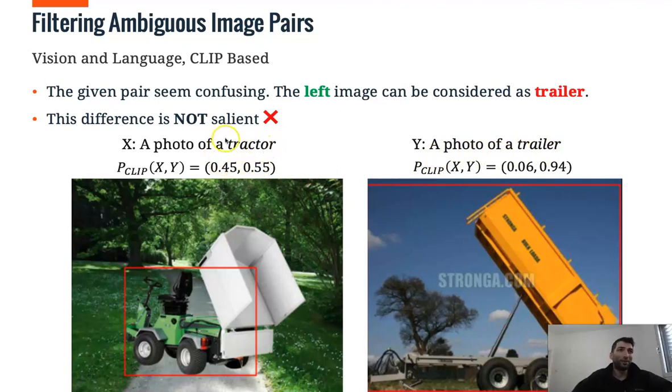However, if we look on this image, this image is 55% likely to be a photo of a trailer rather than a photo of a tractor. So, this given pair seems confusing because the left image can be considered as trailer as well. So, this difference is not salient. And therefore, we filter it from our data set.